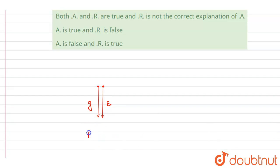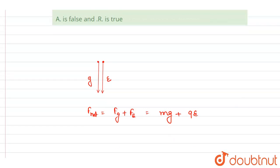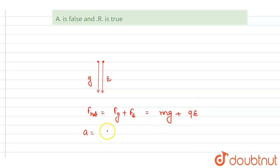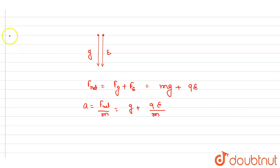The net force that will act on a particle in the downward direction is gravitational plus electric field, so it will be mg plus eq. We know that electric force is charge times electric field. So if I write down the acceleration, it will be g plus eq/m if you divide it with mass.